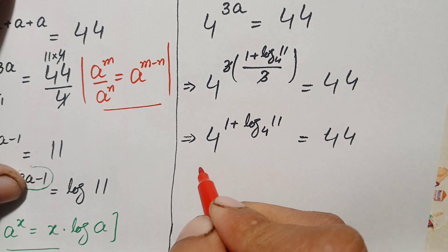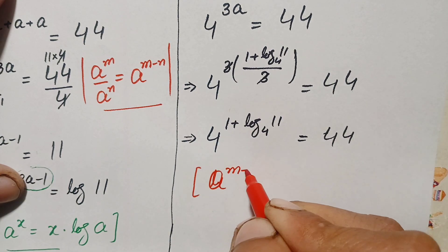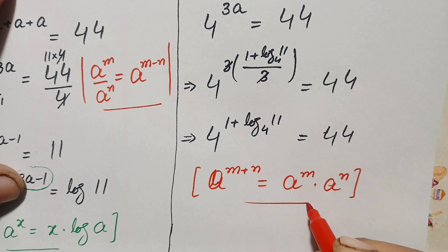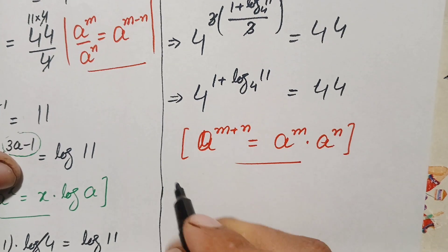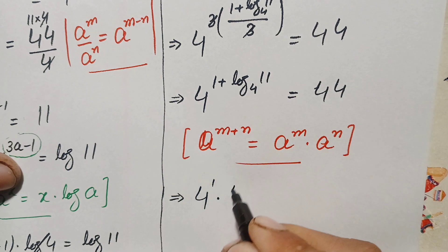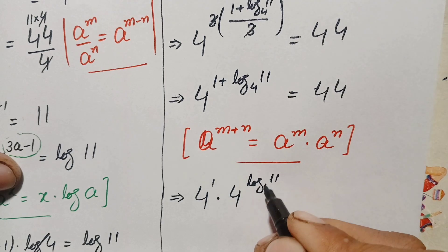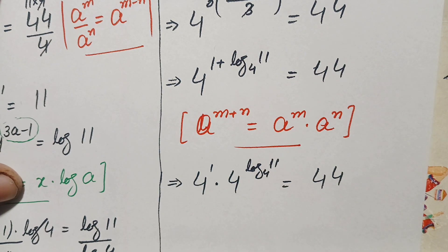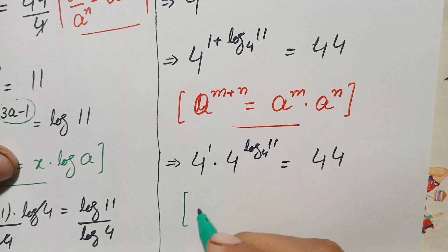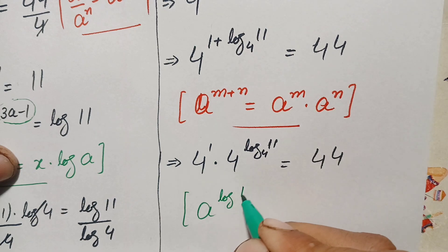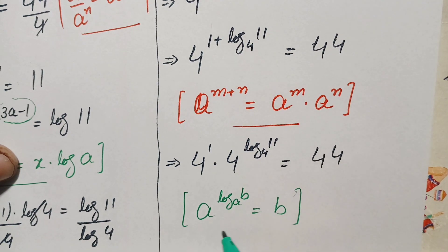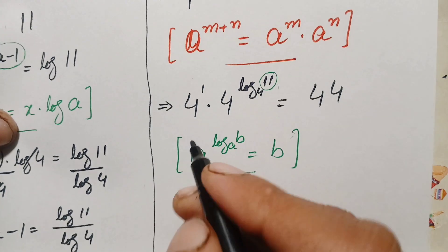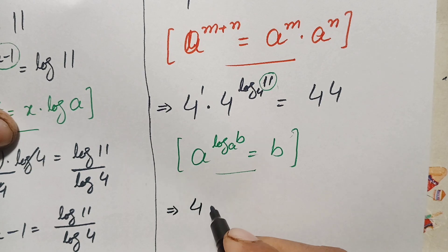We now apply the logarithm identity: a raised to power log base a of b equals b. So 4 raised to power log₄(11) equals 11. Therefore the expression becomes 4^1 times 11, which is simply 4 times 11.